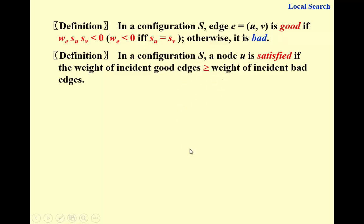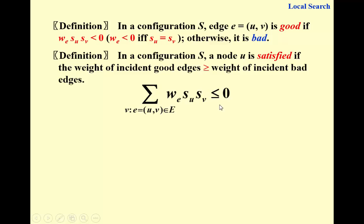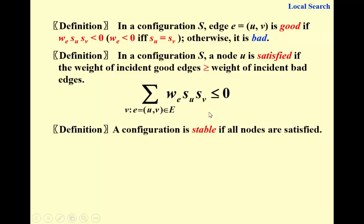To write it more mathematically, for node u, we require that the sum over all incident edges of w_e · s_u · s_v is not positive. This implies the good edges outweigh the bad edges. We say a configuration is stable if all nodes are satisfied — not necessarily perfect, but for every node there are more good edges than bad edges.